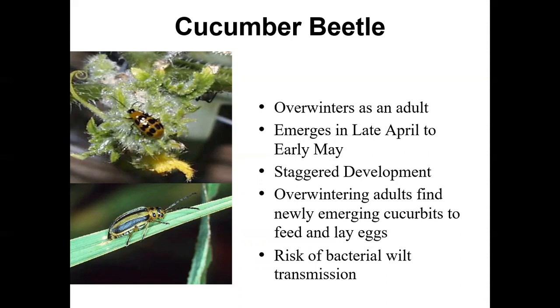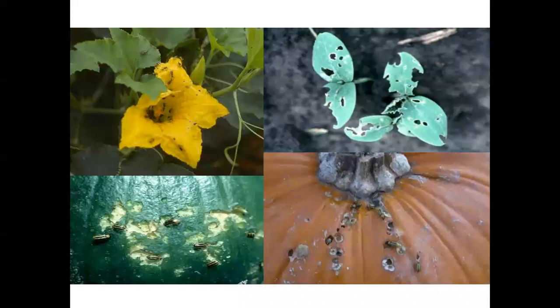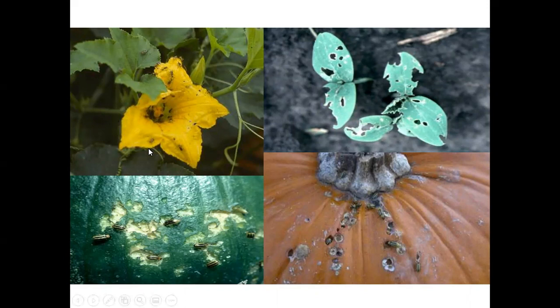The biggest issue with cucumber beetles is the risk of bacterial wilt transmission, which we talked about in the wilt module. Feeding on the cotyledons can be a problem if feeding is really vigorous, but what we're mainly concerned about is the spread of that disease into the plant. The biggest risk is those early vegetative stages when the first generation of adults is actively feeding. Once flowers are present, beetles prefer flowers, and when the flower dies and drops off, you're not seeing movement of bacteria into the plant. High numbers can still be a concern, but it seems to be less of a risk.